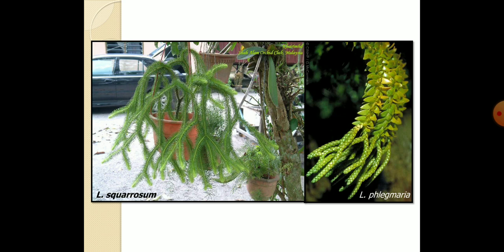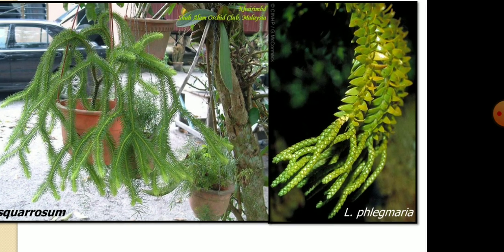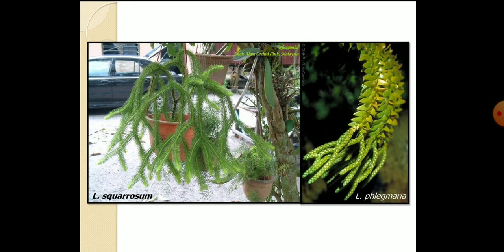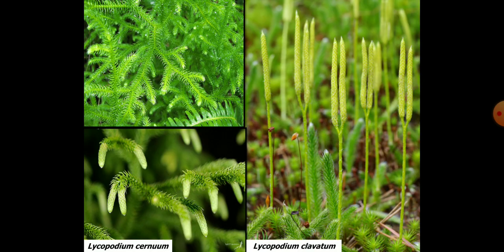The picture shows Lycopodium phlegmaria, which commonly grows as an epiphyte on other substrates. The terrestrial ones are Lycopodium cernuum and Lycopodium clavatum, which are erect or prostrate in nature. Also shown is Lycopodium wallabii and some other species.